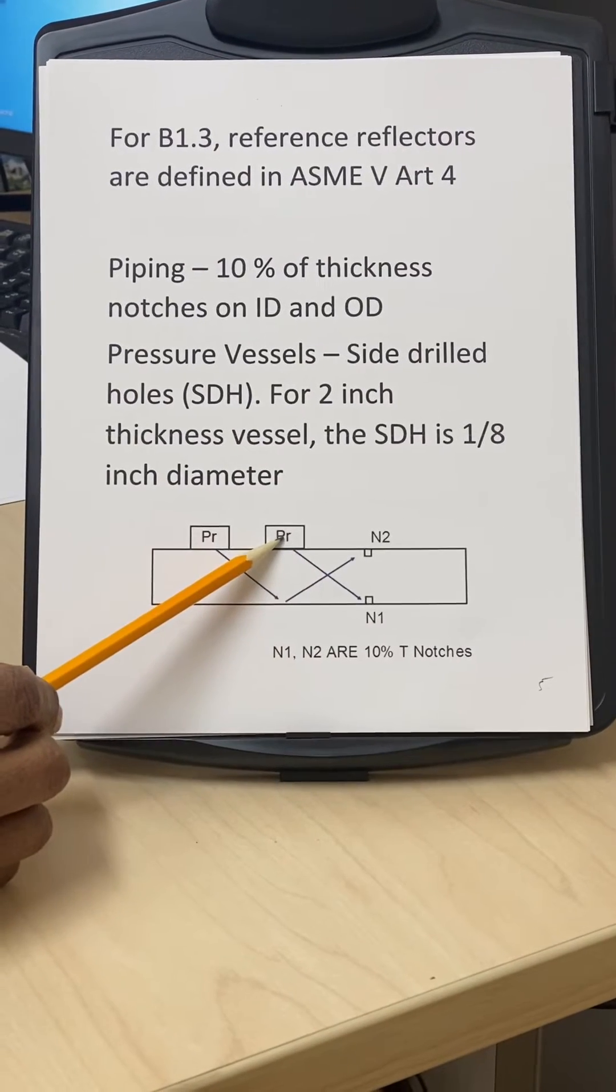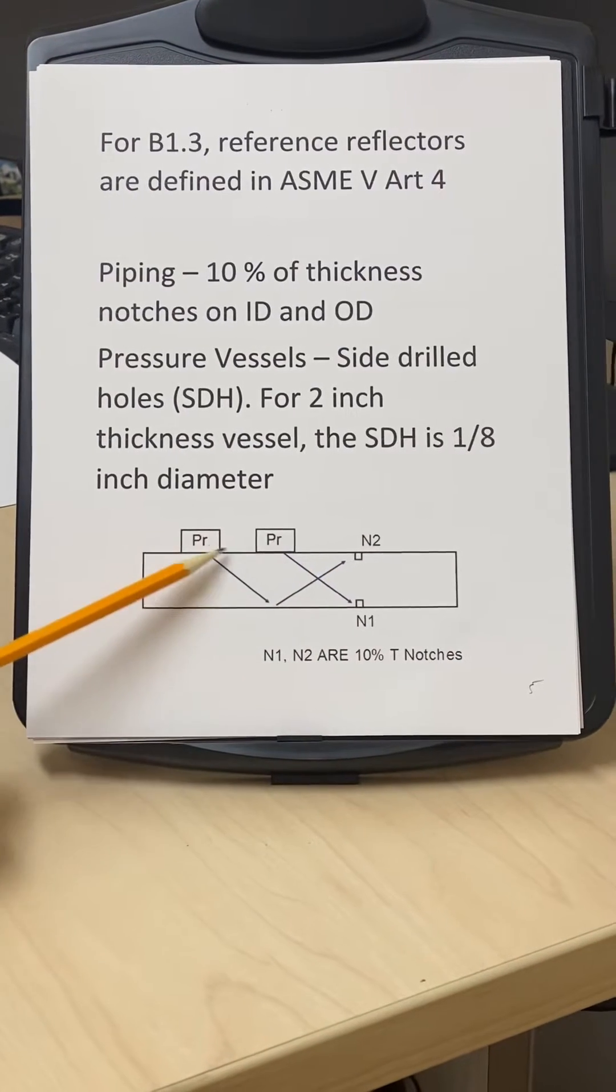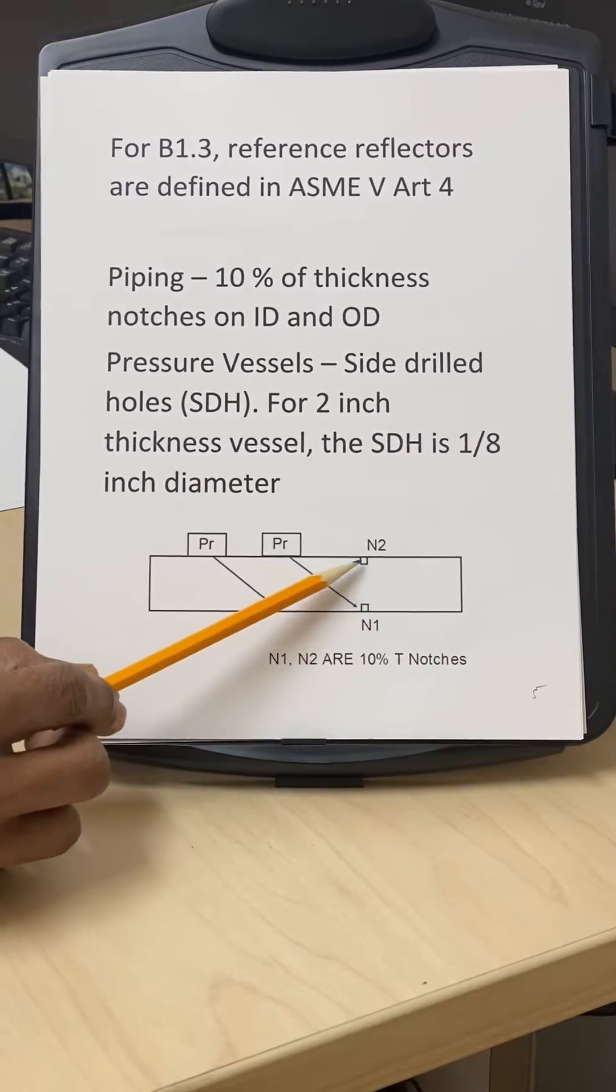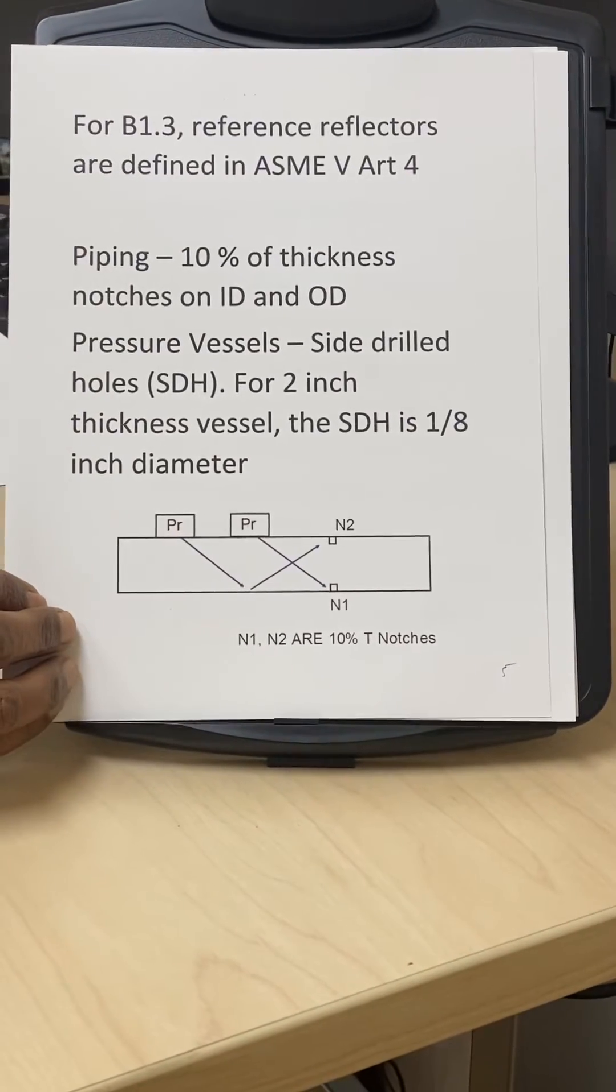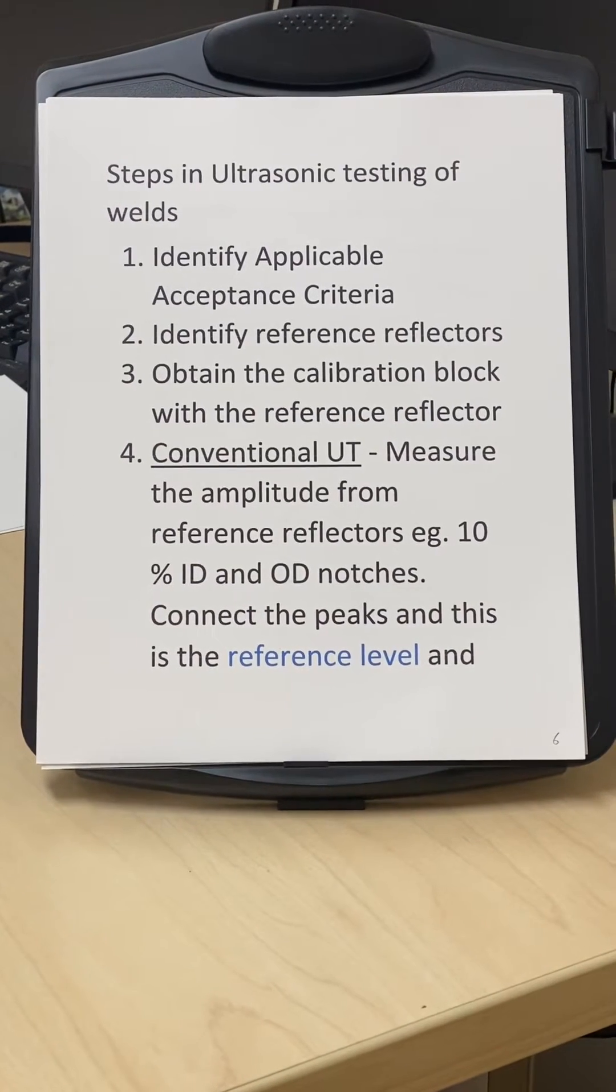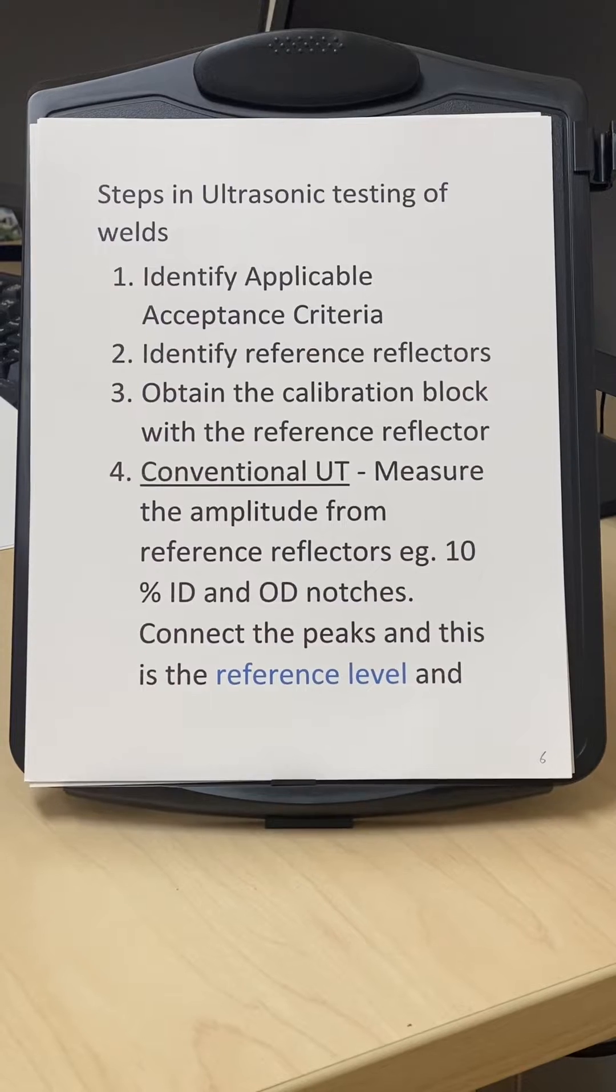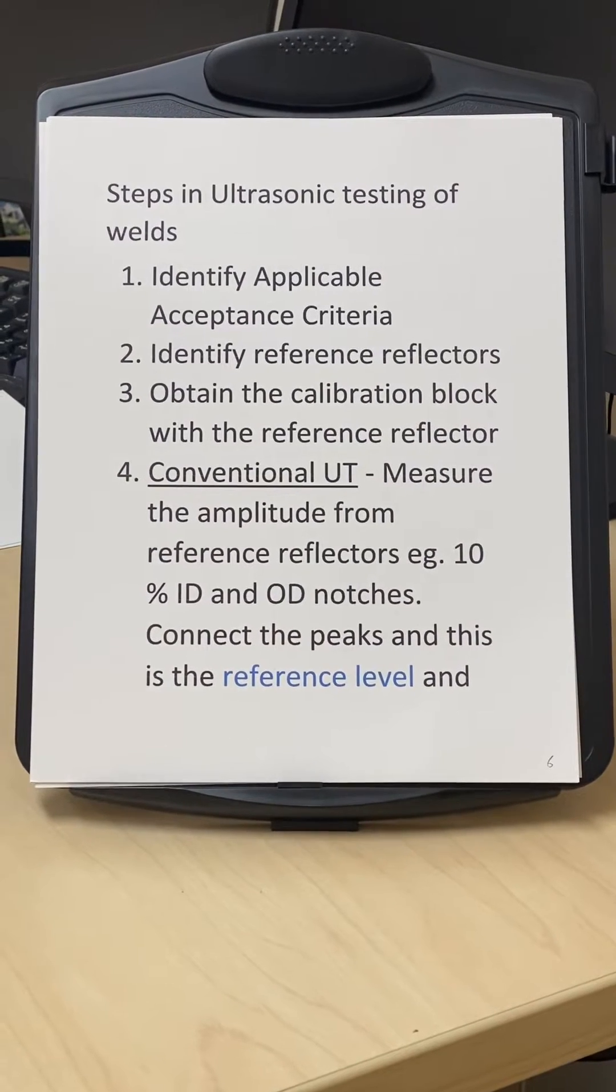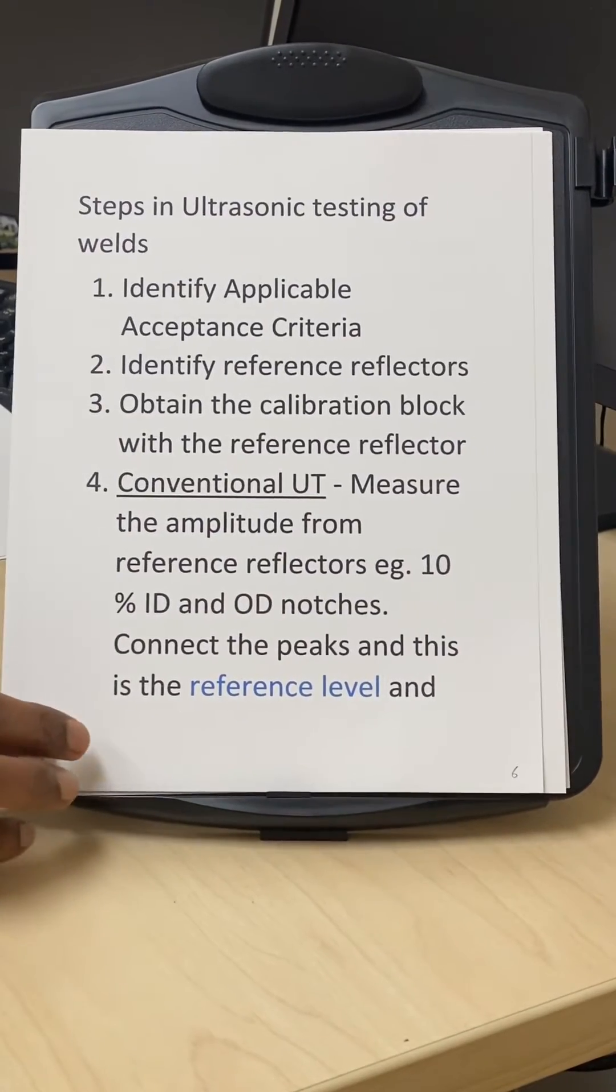What we do is, we put the probe here for conventional UT. We pick the signal from the notch N1, which if I'm on the OD, this will be the ID of the pipe. Then we move the probe back, the sound reflects from the ID and then we pick up the notch. So we have the two signals N1 and N2. Then we take the amplitudes from N1 and N2 and we connect the two signals.